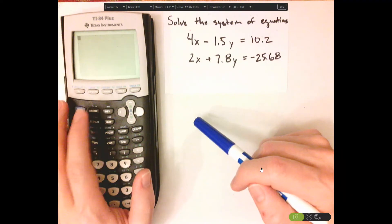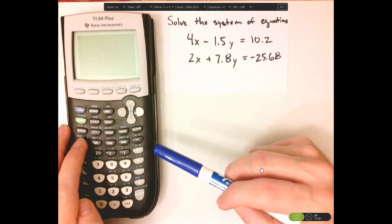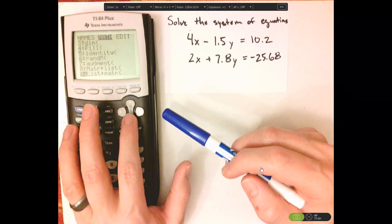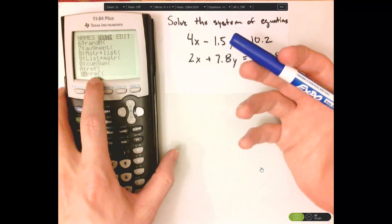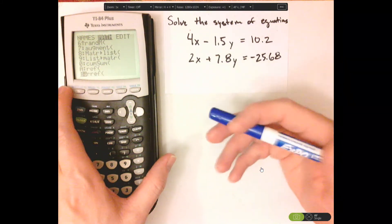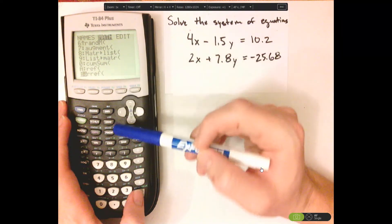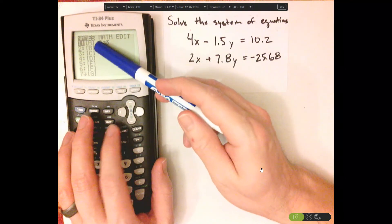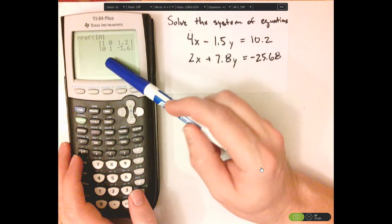Go to 2nd, quit. Now we're going to use one of the operations. Go to 2nd, matrix, go to math, go all the way down to rref. Basically this is what's called the Gaussian-Jordan elimination method using row transformations. Click on that and then go back to matrix. Select the matrix under names and then hit enter. You could put the other parenthesis in there, but you don't have to.